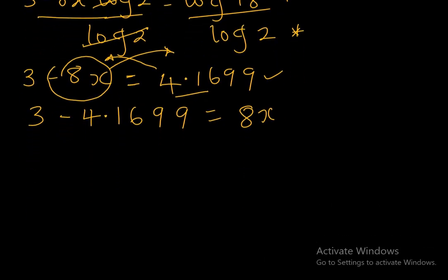Okay, 3 minus 4.1699 will give us minus 1.1699 equal to 8x.